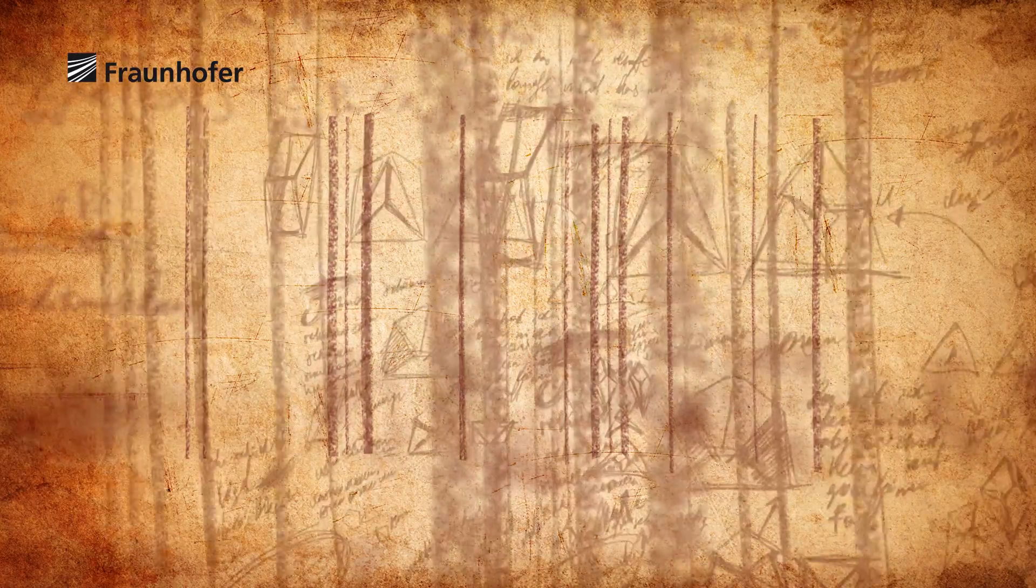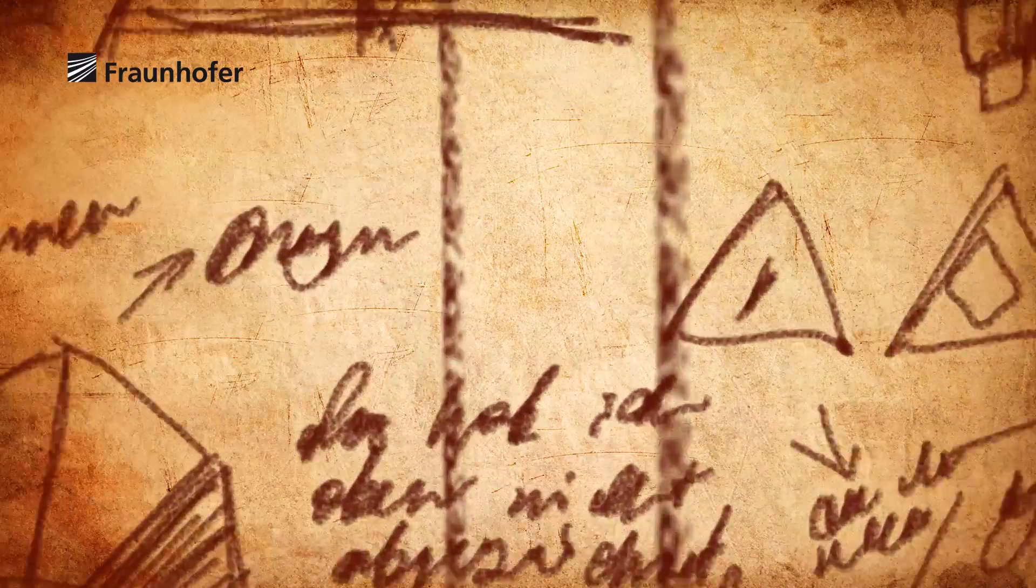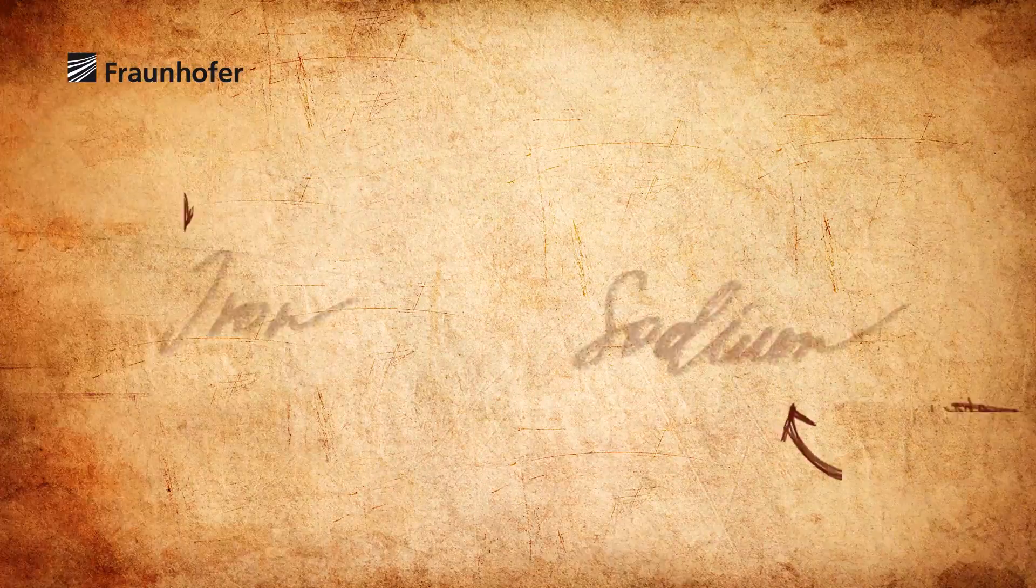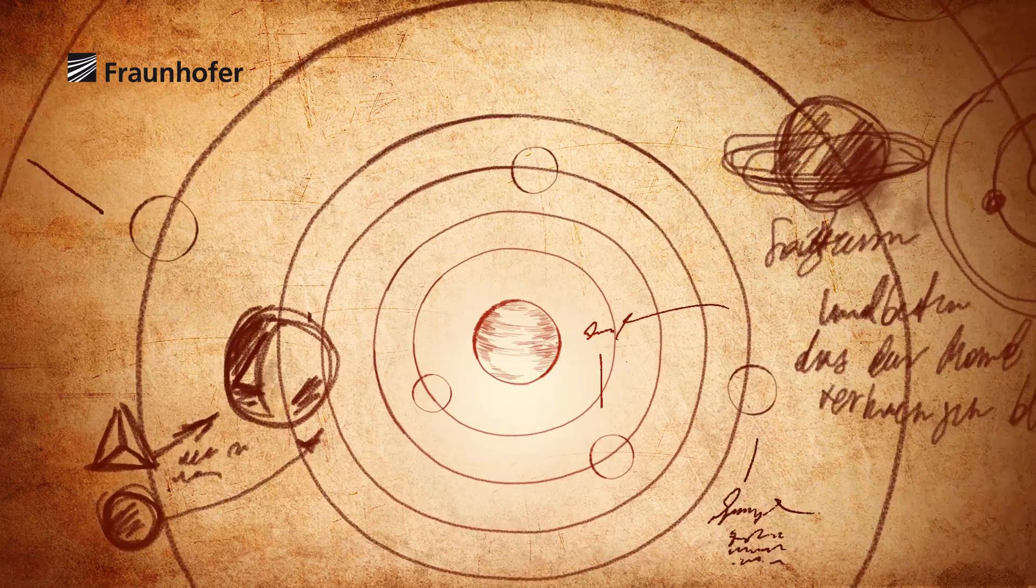Some of these barcodes are also found in the dark lines of the solar spectrum. The researchers found there, among others, the codes for iron and sodium. They concluded that these minerals must also occur on the sun.